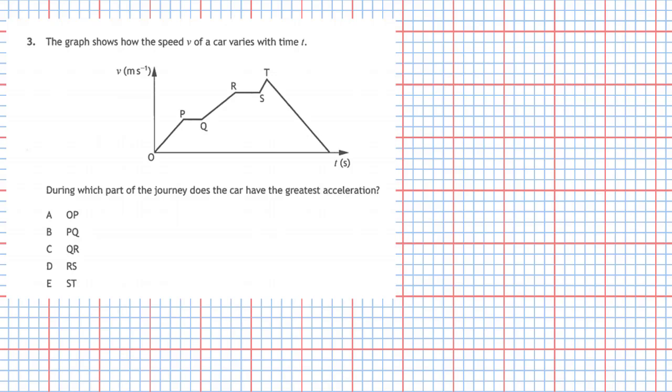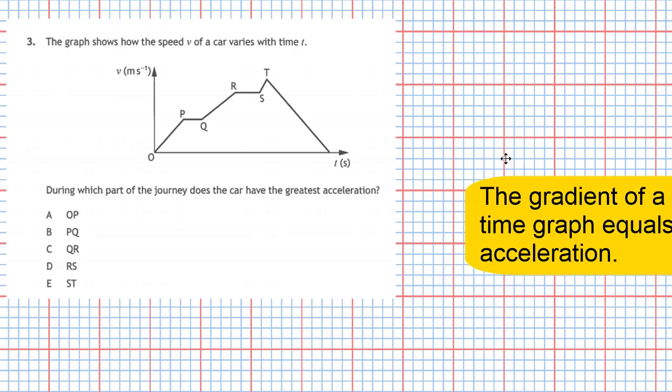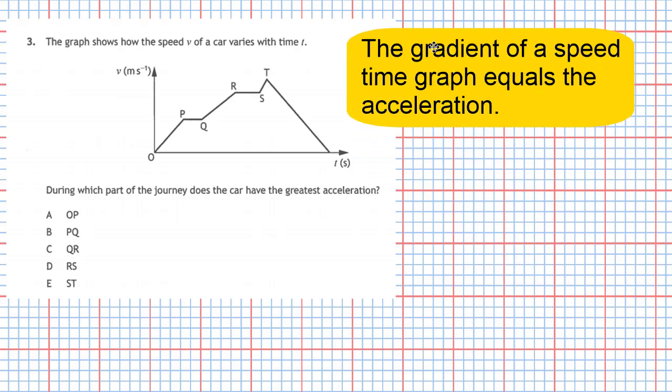The key factor here, the key thing we've got to remember in this question, is that the gradient of a speed-time graph equals the acceleration. So we can compare the gradients of this graph, and then we can work out the steepest gradient, and that will be the biggest acceleration, the greatest acceleration.